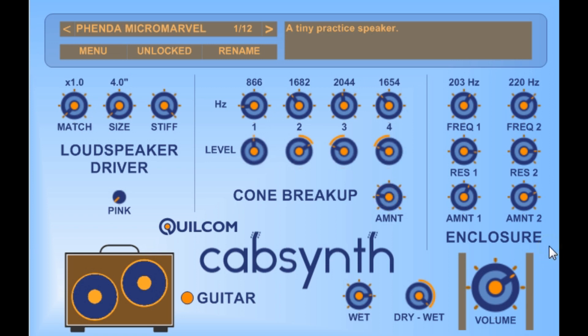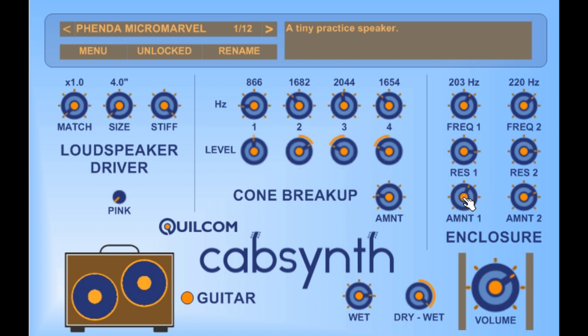Now the speaker box itself, the enclosure, can have formants. These are resonances that actually add to the tone colour of the sound. I've provided two formants. You set the bass frequencies with these two knobs, the resonances and the amount of those resonances that are added to the signal with the amount knobs.